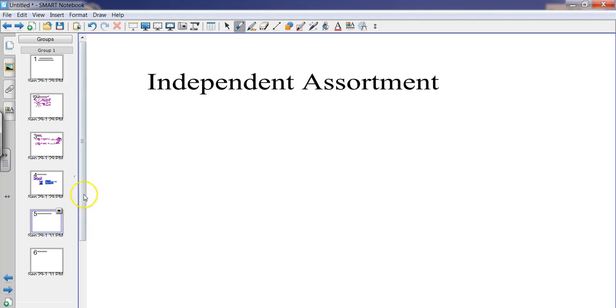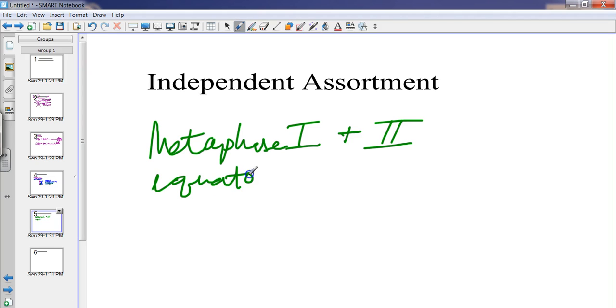The next one is independent assortment. Independent assortment occurs during metaphase I and metaphase II of meiosis I and II. This is when the chromosomes align at the equatorial plate or metaphase plate in a random order. So they independently assort themselves at the equator.